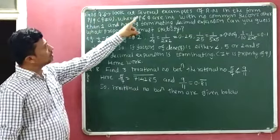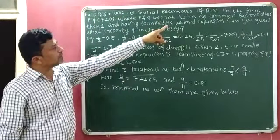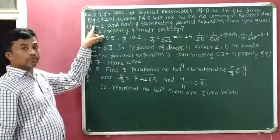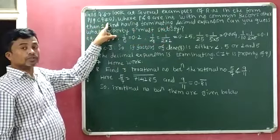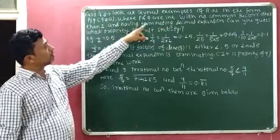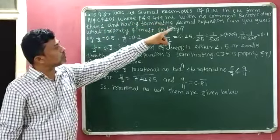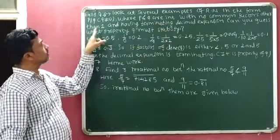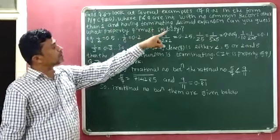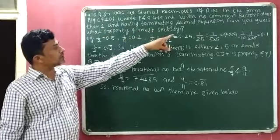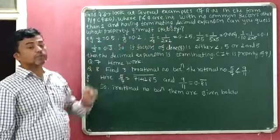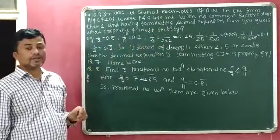Look at several examples of rational numbers in the form P by Q (where Q is not equal to 0), where P and Q are integers with no common factors other than 1, and having terminating decimal expansion. Can you guess what property Q must satisfy?